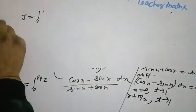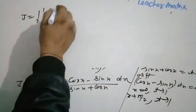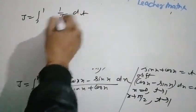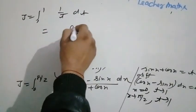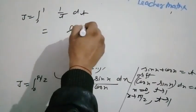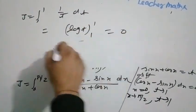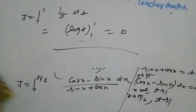The limit is from 1 to 1, so there is no issue. The answer becomes zero. The integral evaluates to zero.